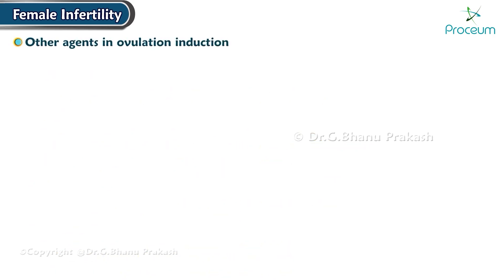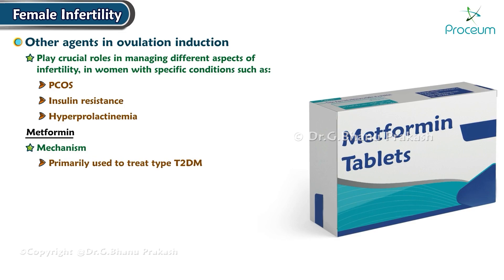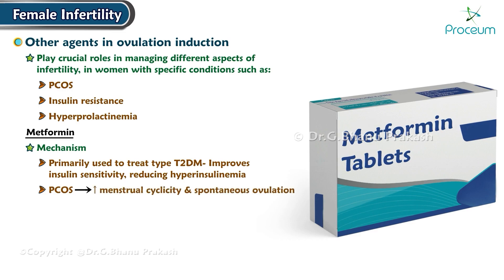Now let's learn about other agents in ovulation induction. In addition to the primary pharmacological agents, several other strategies and medications play crucial roles in managing different aspects of infertility, particularly in patients with specific conditions such as polycystic ovarian syndrome, insulin resistance, and hyperprolactinemia. First, metformin. Mechanism: Primarily used to treat type 2 diabetes, metformin improves insulin sensitivity, reducing hyperinsulinemia. In the context of polycystic ovarian syndrome, this effect can lead to an increase in menstrual cyclicity and spontaneous ovulation.